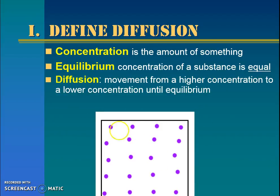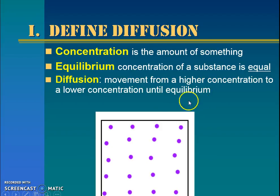Diffusion is the movement of molecules from a high concentration to a low concentration until they reach equilibrium, or equal amounts everywhere. This can apply to any molecules — it could be perfume, it could be the smell of bacon, it does not matter.